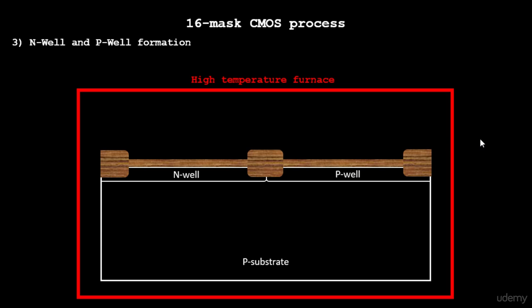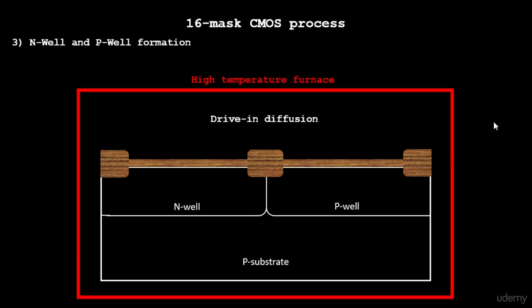The next step is to take this into a drive-in furnace, push it to very high temperature for a very long time, about 1100 degrees Celsius for four to six hours. That will drive in or diffuse the boron and phosphorus atoms into the P-type substrate forming clear wells. These are called twin tub process.